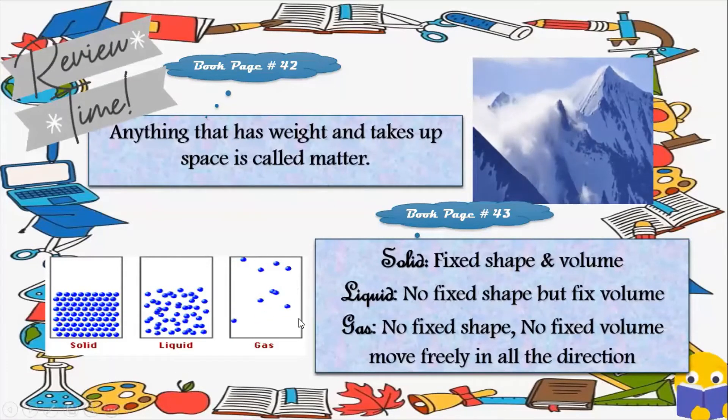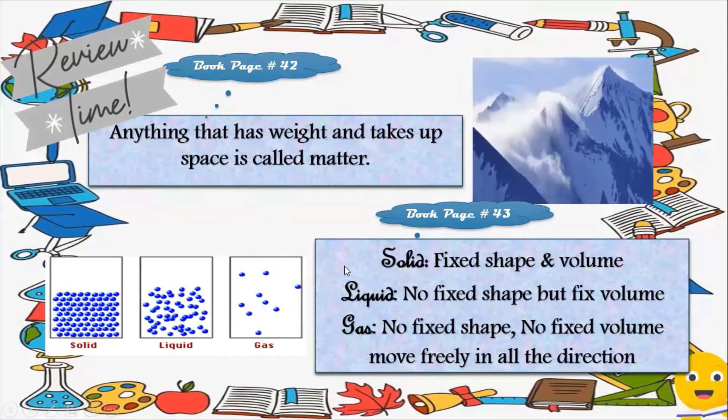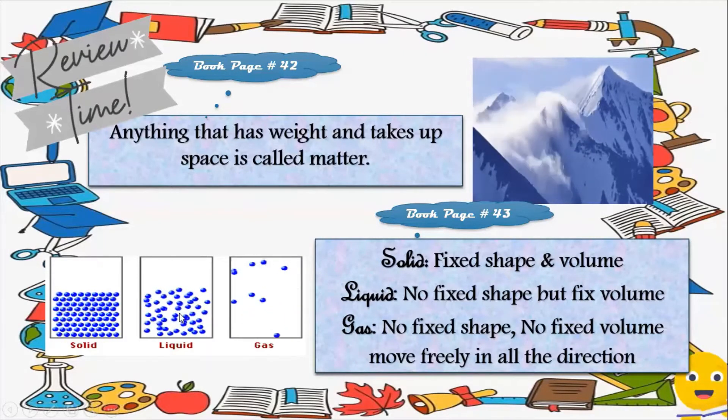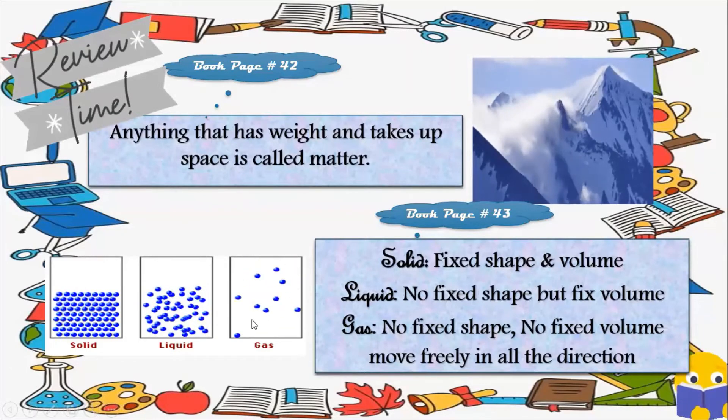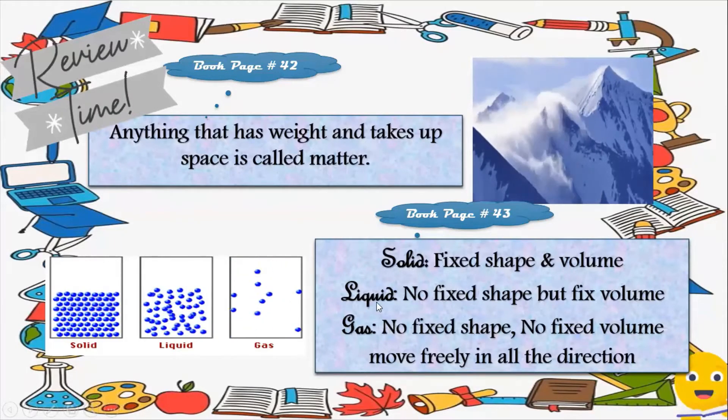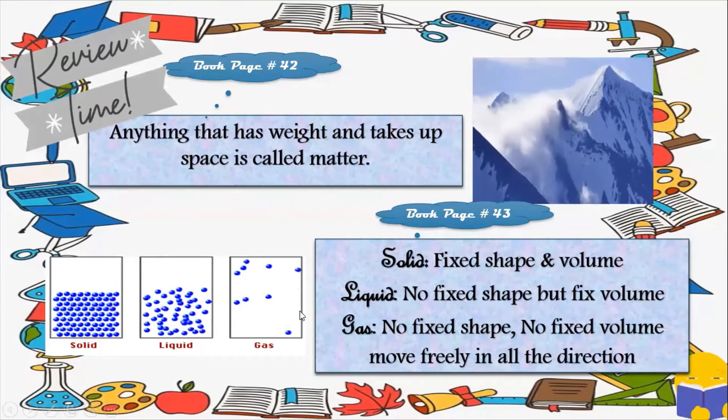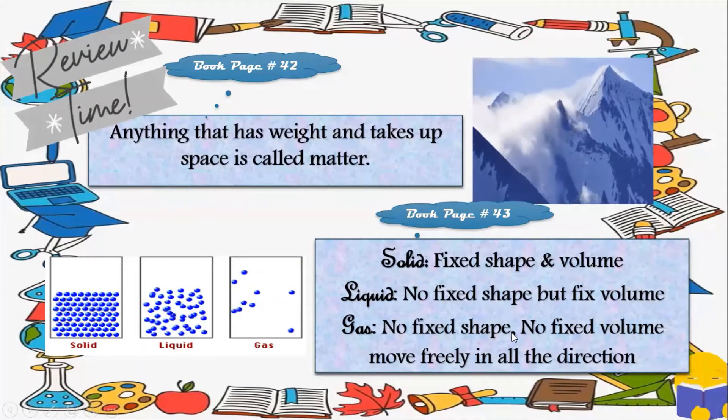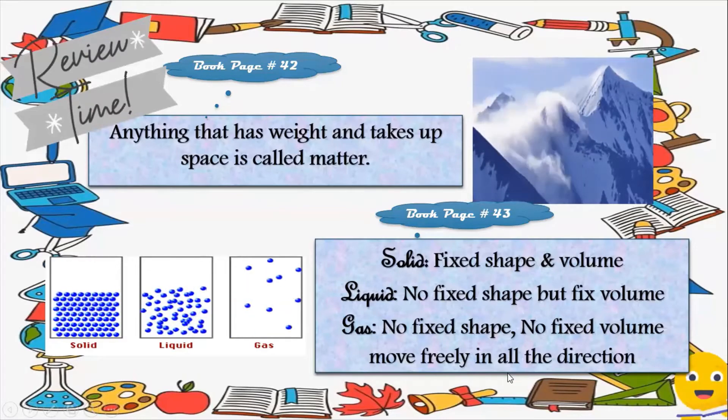Gases. There are bigger spaces between the particles in a gas than between those in liquid. They are not linked and can move freely in all the directions. For this reason, a gas has no fixed shape and no fixed volume.